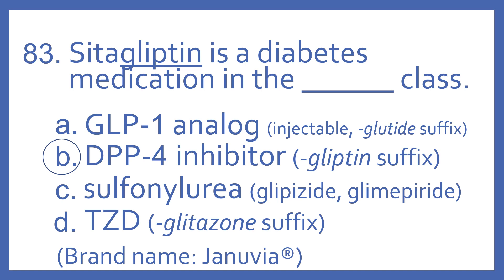The GLP-1 analogs are injectable products with the 'glutide' suffix. The sulfonylureas are glipizide and glimepiride, the older medications for diabetes. The TZDs have the 'glitazone' suffix. The brand name of Sitagliptin is Januvia, and it is a DPP-4 inhibitor.